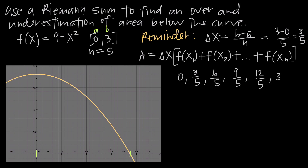Now we mark those off on the graph. We're looking for 3 fifths, which is 0.6, and that's this point right here. Then 6 over 5, which is 1.2, so that's this point. Then 9 fifths, which is 1.8, so that's right here. Then 12 over 5, which is 2.4, so that'll be here. And then 3 is the right edge. You can see we now have 5 subintervals, which is what we needed.